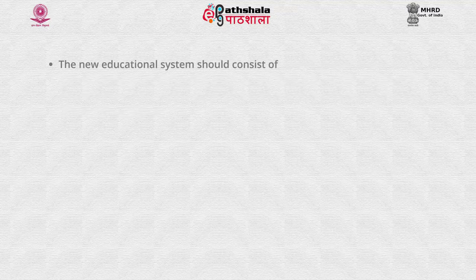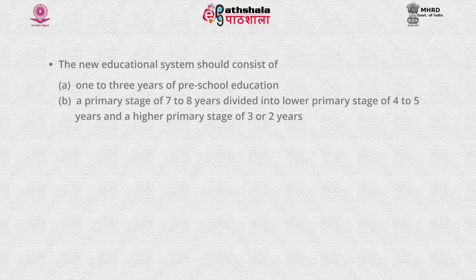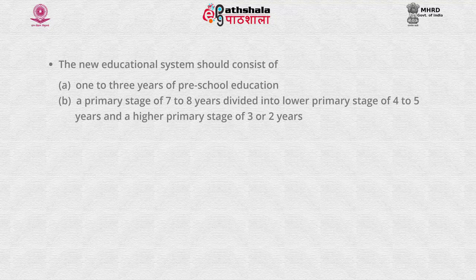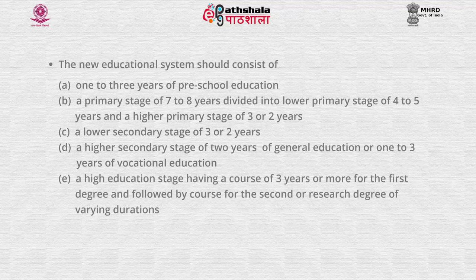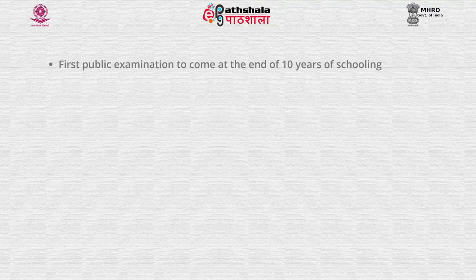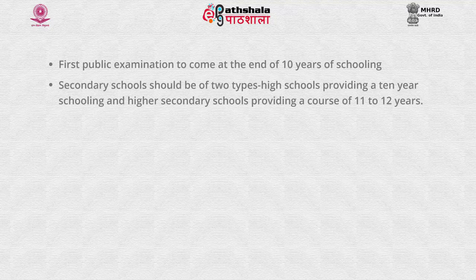The new educational system should consist of 1 to 3 years of preschool education; a primary stage of 7 to 8 years divided into a lower primary stage of 4 to 5 years and a higher primary stage of 3 or 2 years; a lower secondary stage of 3 or 2 years; a higher secondary stage of 2 years of general education or 1 to 3 years of vocational education; and a higher education stage with a course of 3 or more years for the first degree, followed by courses for the second or research degree of varying duration. The first public examination should come at the end of 10 years of schooling.